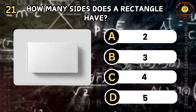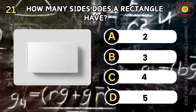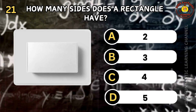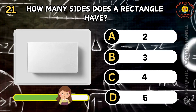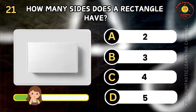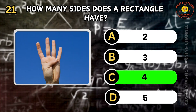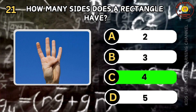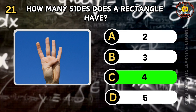Question 21. How many sides does a rectangle have? A: 2, B: 3, C: 4, D: 5. You've got it right! The correct answer is C. A rectangle has four sides.